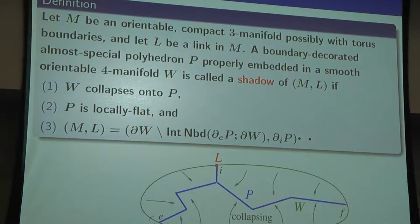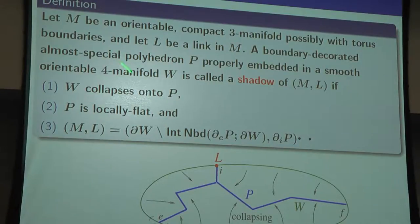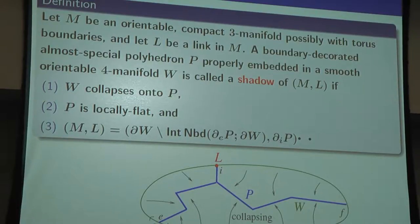First we give the structure of a simple shell decomposition, then collapse W to P. For level F, we do nothing — the neighborhood is a solid torus but the knot doesn't correspond to the meridian. This is the definition of shadow.